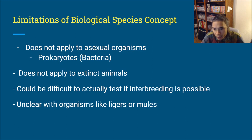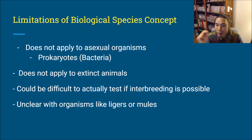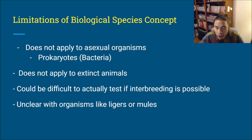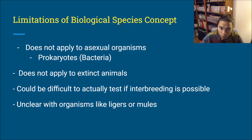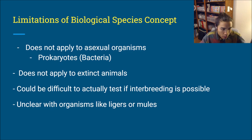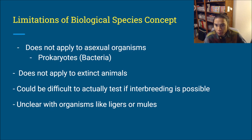It can also be difficult to actually test if interbreeding is possible. You might have an organism that in a lab setting mates just fine, but they never mate out in the wild — so are they still the same species? It's unclear with organisms like ligers or mules, or with people who are infertile or have a genetic disorder where they can't use their genome to produce offspring. Those individuals are still considered part of the species, but they can't interbreed. Mules look like other mules but can't breed with one another — it's awkward.